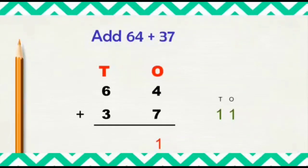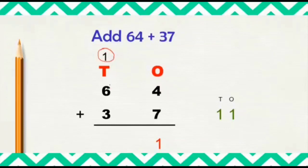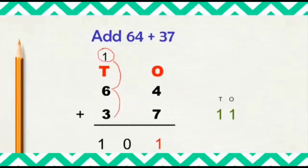Put 1 here and carry 1 to the 10s column. Now don't forget to add the carried number when you are adding the 10s column. First add 6 plus 1. What is 6 plus 1? 7, and 7 plus 3 will be 10. So we will write 10 here. So when we added 64 plus 37, the total is 101.